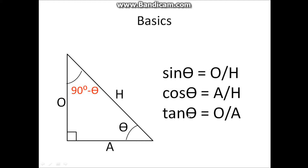Tangent theta is actually sin theta divided by cosine theta. Take a look at this — if I put a divide sign here, sin theta over cosine theta equals O over H divided by A over H. You can just cancel these two H's and you get O divided by A, which is tangent theta. Hence, sin theta over cosine theta equals tangent theta. This is extremely important if you want to do questions related to trigonometry.